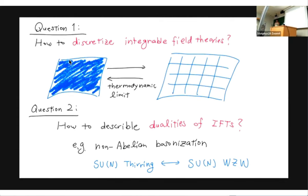Now there are two questions I want to ask. The first question is how to discretize these integrable quantum field series. Of course you can discretize in an arbitrary way, but then integrability is broken. The other direction is also interesting: if you start with an integrable lattice model and take the continuum limit, what is the integrable quantum field theory in the IR? That's a very typical problem and one of the historical motivations for integrable models, dating back decades.